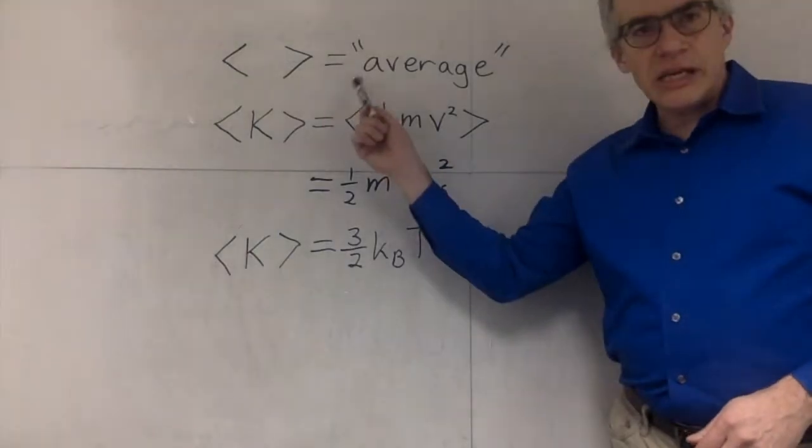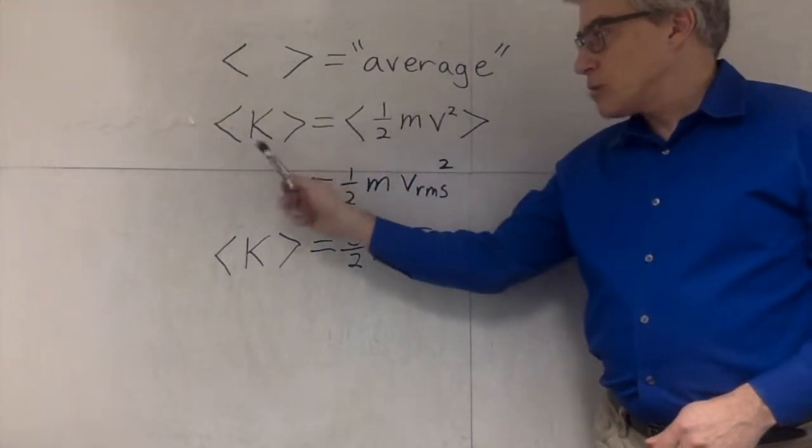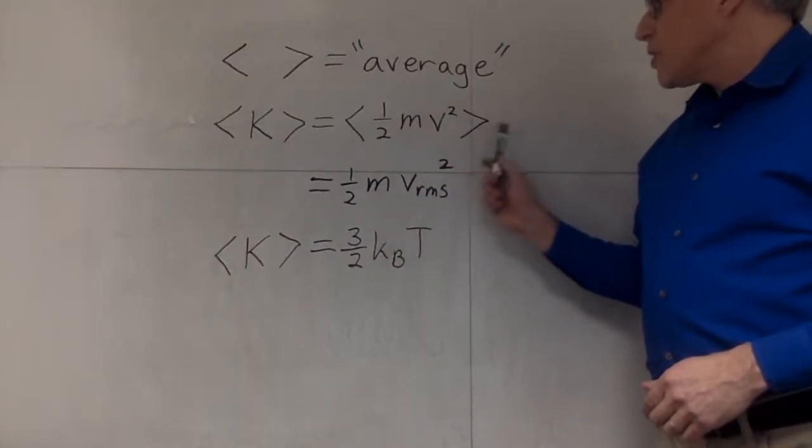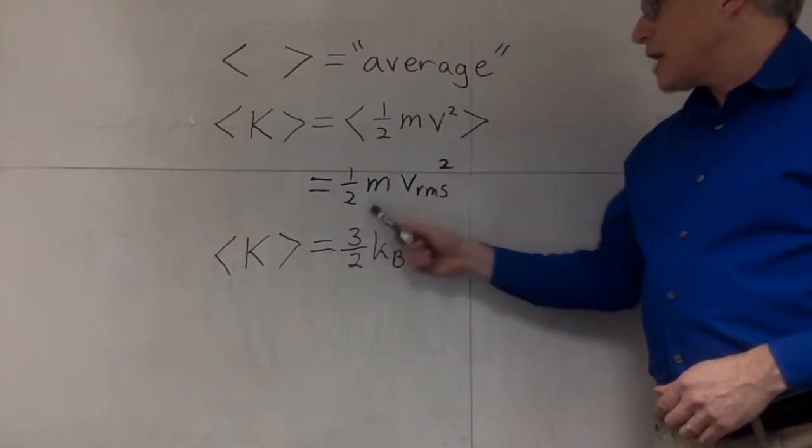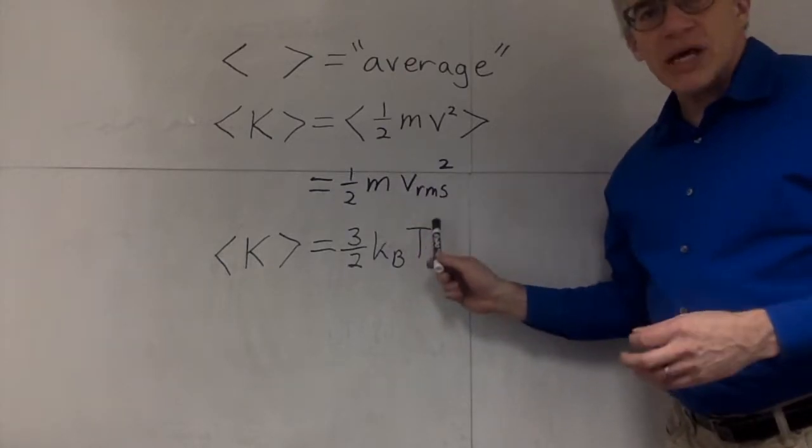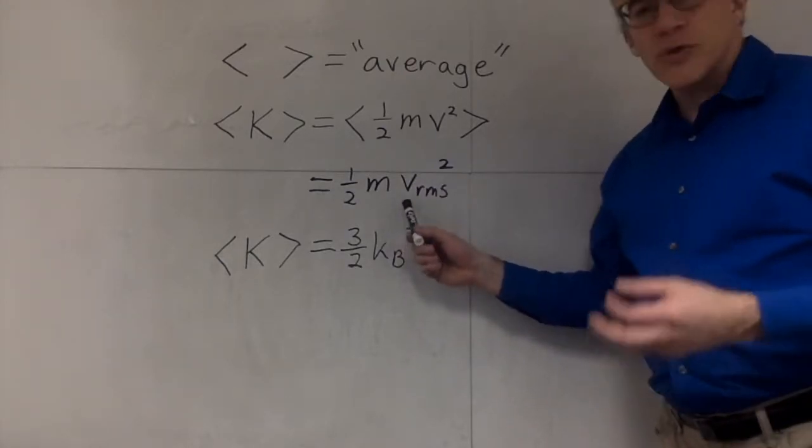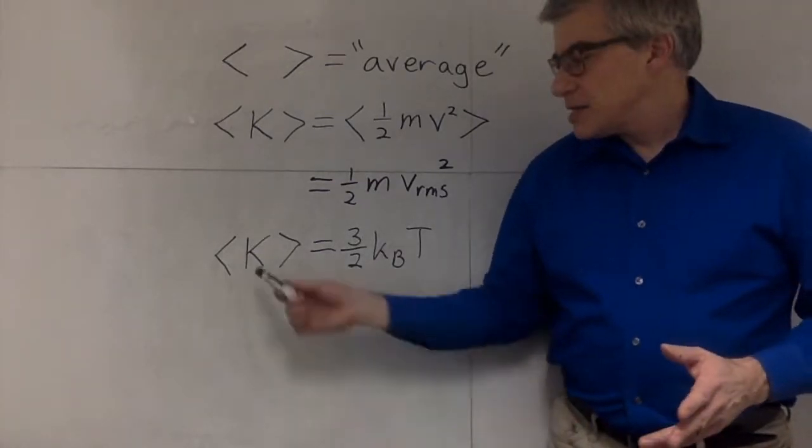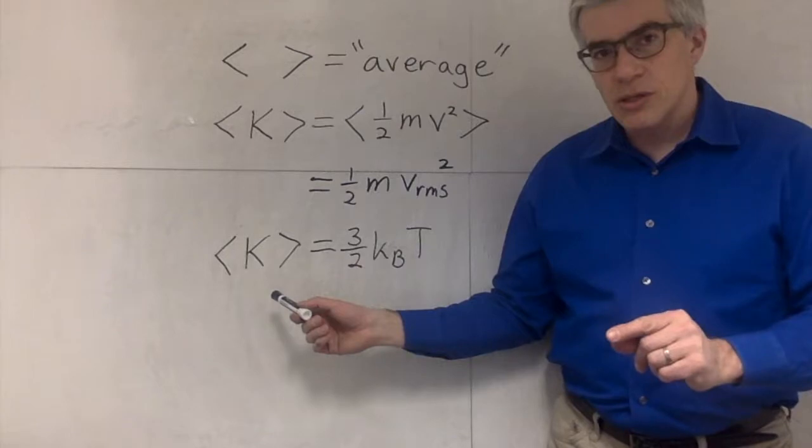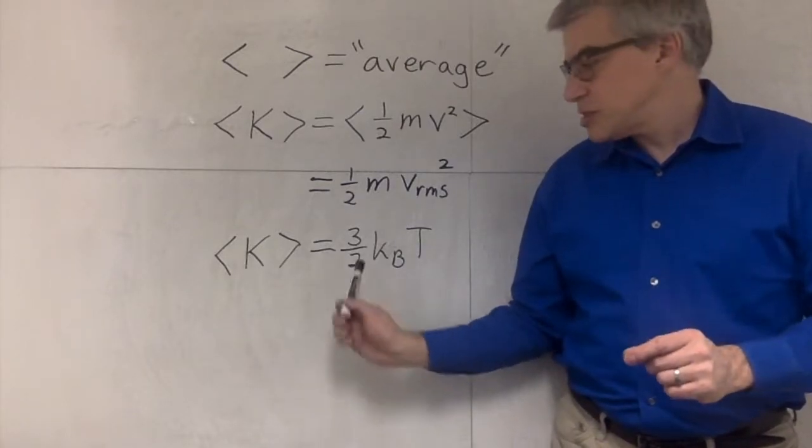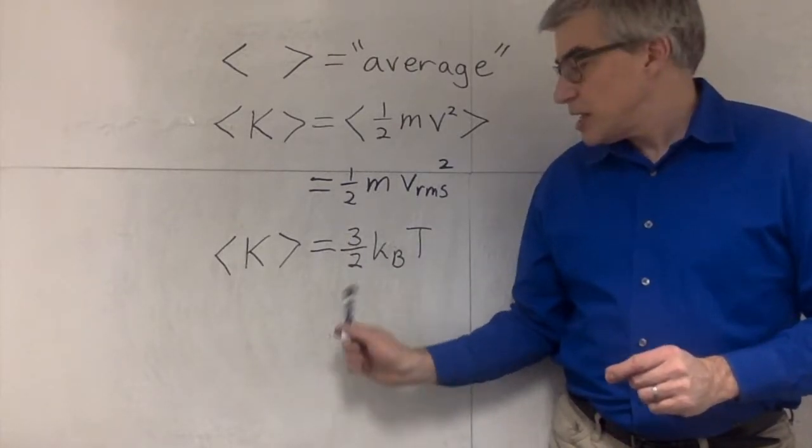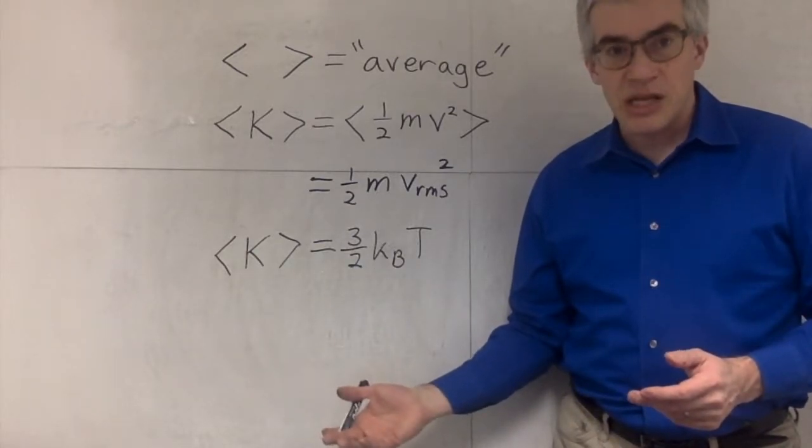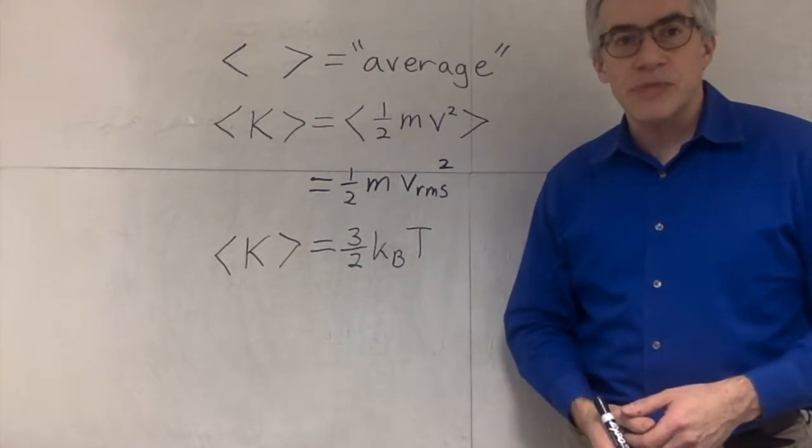Angle brackets stand for average, so when I put angle brackets around K, I'm talking about the average kinetic energy. 1/2 mv squared average equals 1/2 m v RMS squared. You can solve for the root mean square velocity. It turns out that the average kinetic energy of a particle, which is moving in three dimensions, 3 is for three dimensions, is 3/2 kb T. Kb is Boltzmann's constant, T is the absolute temperature in Kelvins.